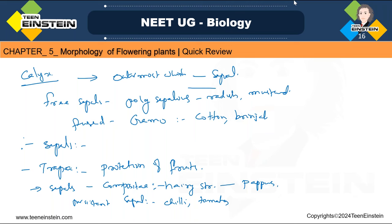We have now learned about some parts of the flower. Next we need to learn about corolla, then about the androecium and gynoecium.